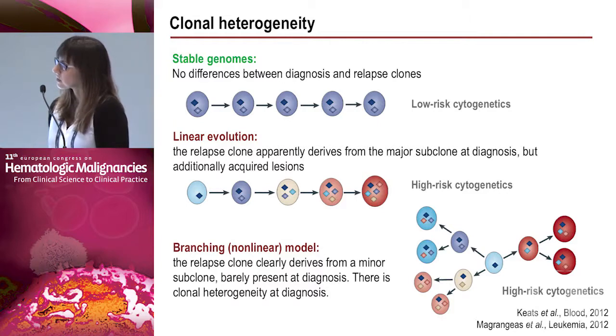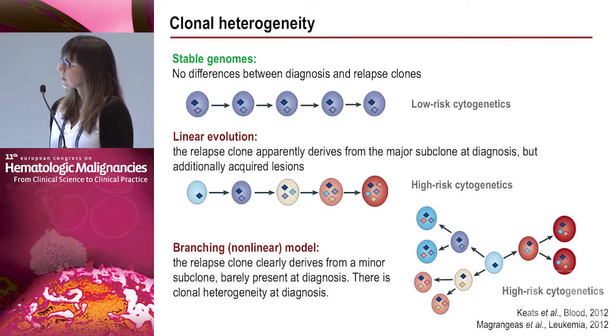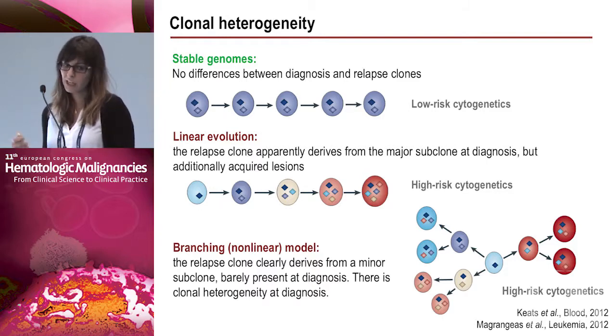An important finding from sequencing studies is clonal heterogeneity. In multiple myeloma we can find three different evolutionary patterns: stable genomes with no differences between diagnosis and relapse clones (characteristic of low-risk cytogenetics); linear evolution where the relapse clone derives from the major subclone at diagnosis but acquires new lesions (characteristic of high-risk cytogenetics); and a branching nonlinear model where the relapse clone derives from a minor subclone barely present at diagnosis, also characteristic of high-risk cytogenetics.